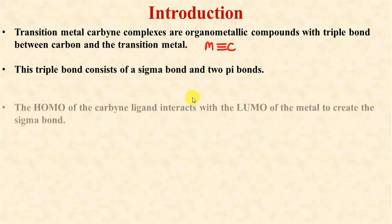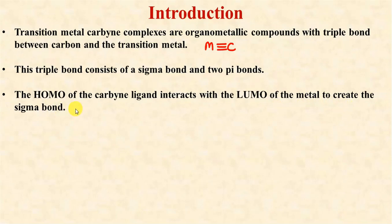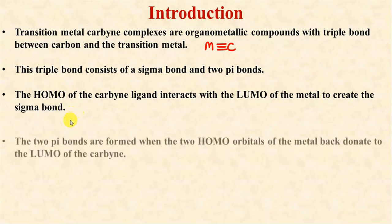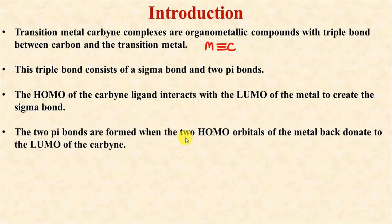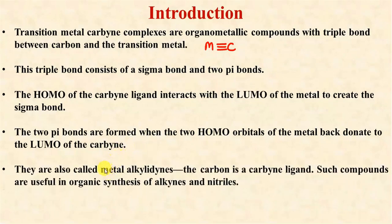The bonding behavior involves the interaction of the highest occupied molecular orbitals of the carbyne ligands, which interact with the lowest unoccupied molecular orbitals of the metal to create a sigma bond. The two pi bonds are formed when the two highest occupied molecular orbitals of the metal form back bonding with the lowest unoccupied molecular orbitals of the carbyne.